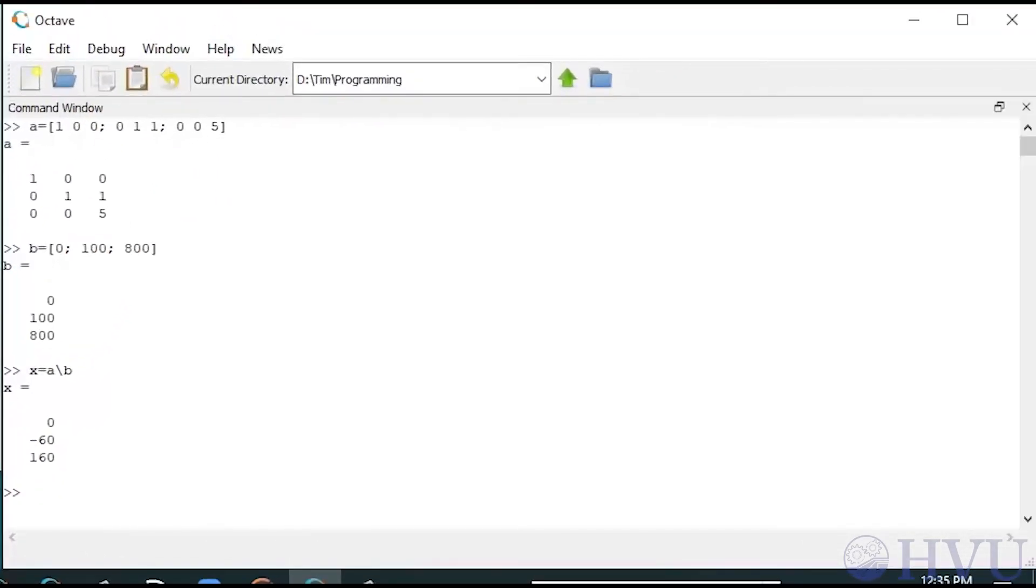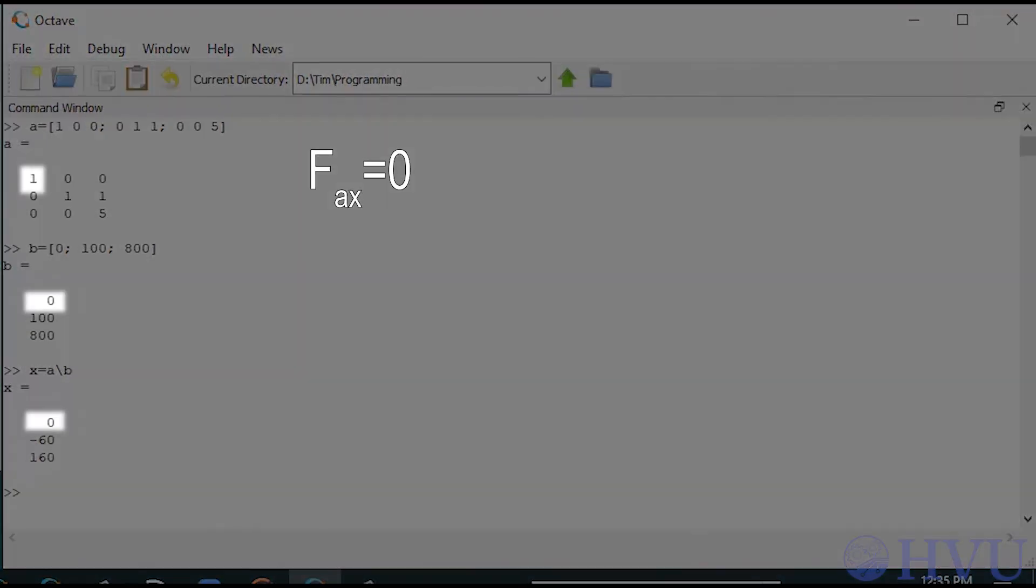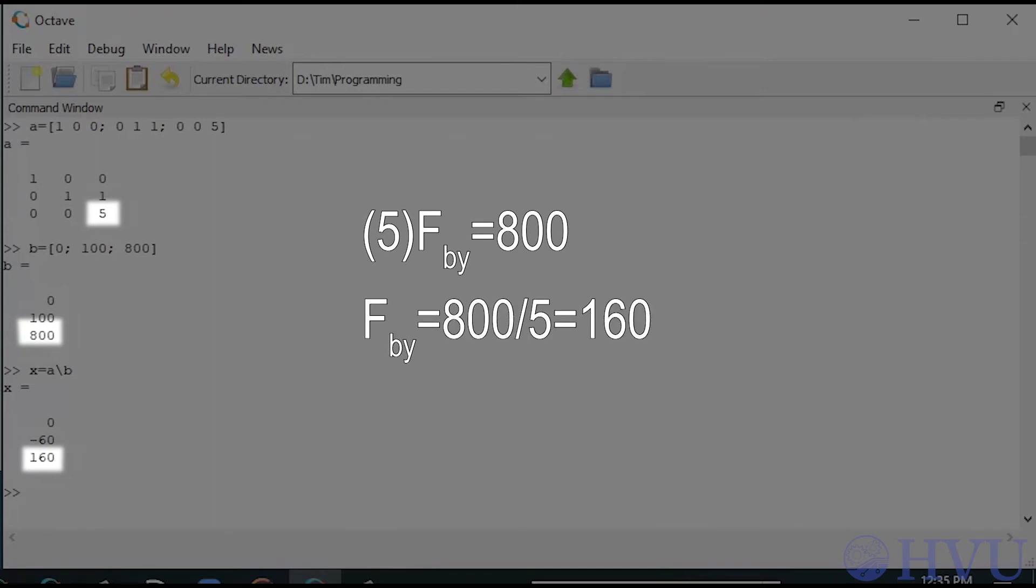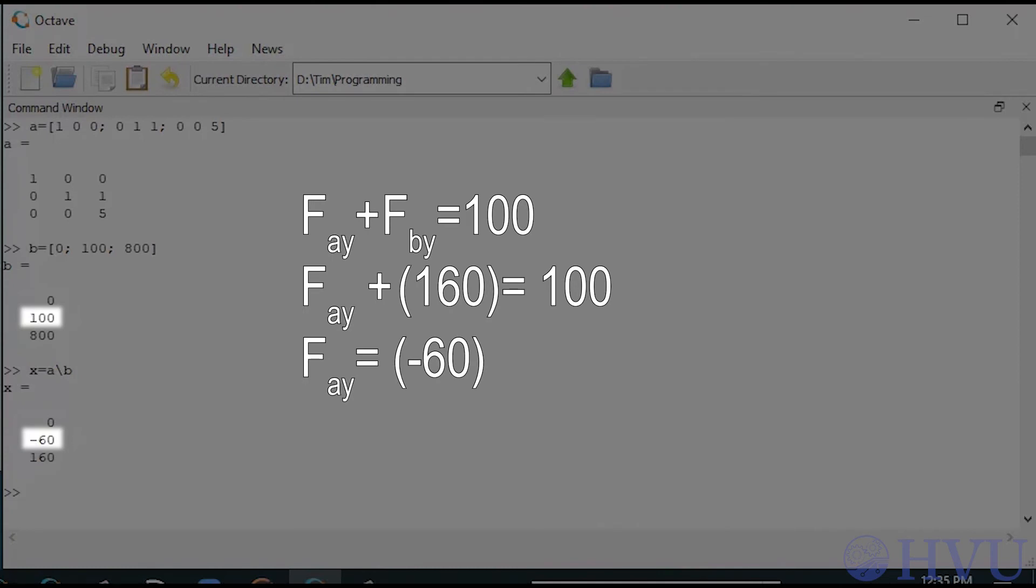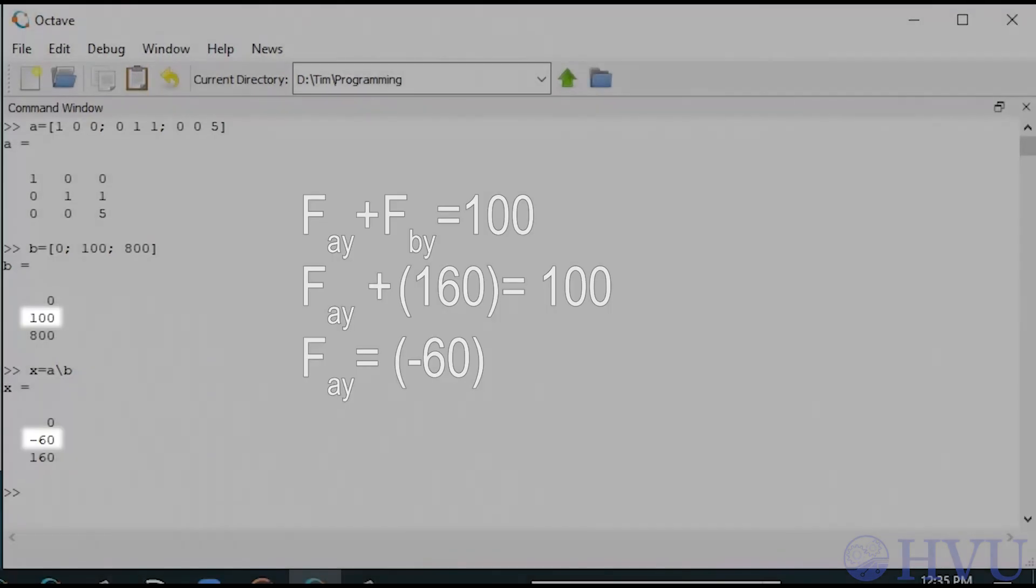Checking results is important, and it's easy to do in this case. The first equation is just FAX equals zero, which agrees with Octave's result from solving the equations. Similarly, the third equation was 5 times FBY equals 800. This means that FBY is 800 over 5, which is 160, which also agrees with the result Octave gave us. Finally, the second equation is FAY plus FBY is equal to 100. If we substitute FBY equals 160 into this, that means that FAY has to be negative 60, which is exactly the result Octave gave us. It's unlikely that most of the problems we use Octave for will be as easy to solve by hand as this one, but it's always important to at least look at the Octave results to make sure that they make sense in terms of the original equations.